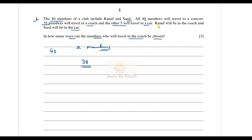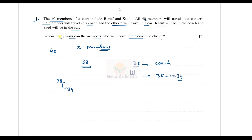We know that Ranuf will travel through the coach, so one place is fixed. Altogether there were 35 people through the coach. Since Ranuf is fixed, that leaves 34 remaining spots. So the number of ways will be 38C34 — because one seat is fixed, we have 35 minus 1 = 34 left, and we choose 34 from the remaining 38 members.